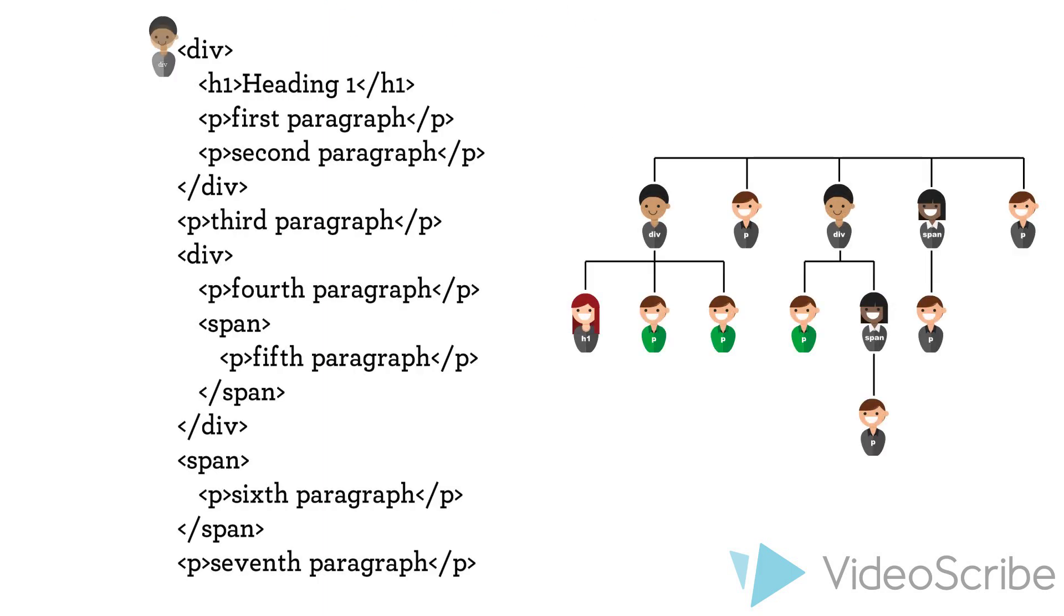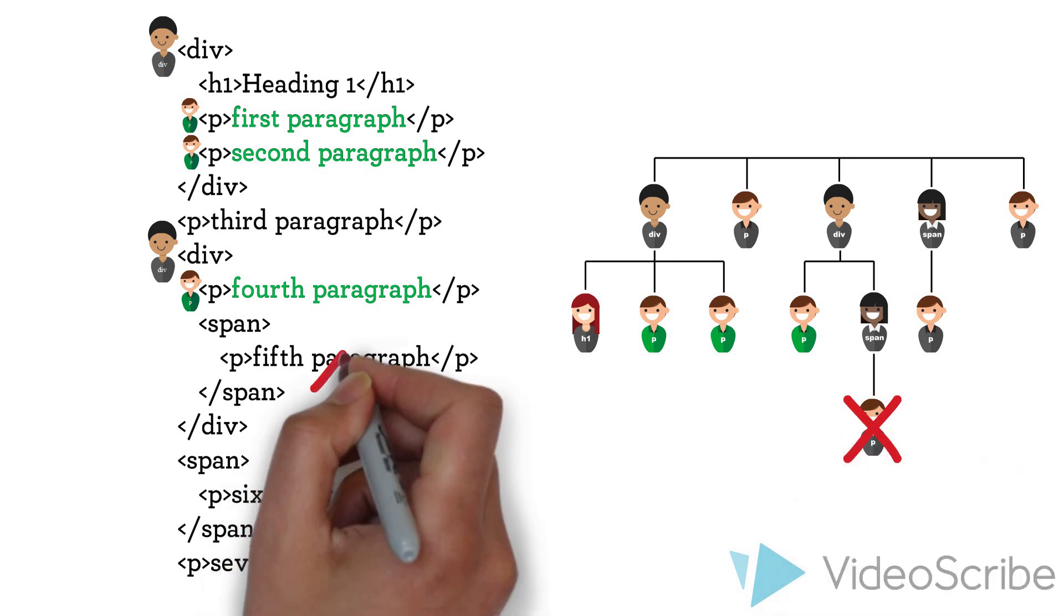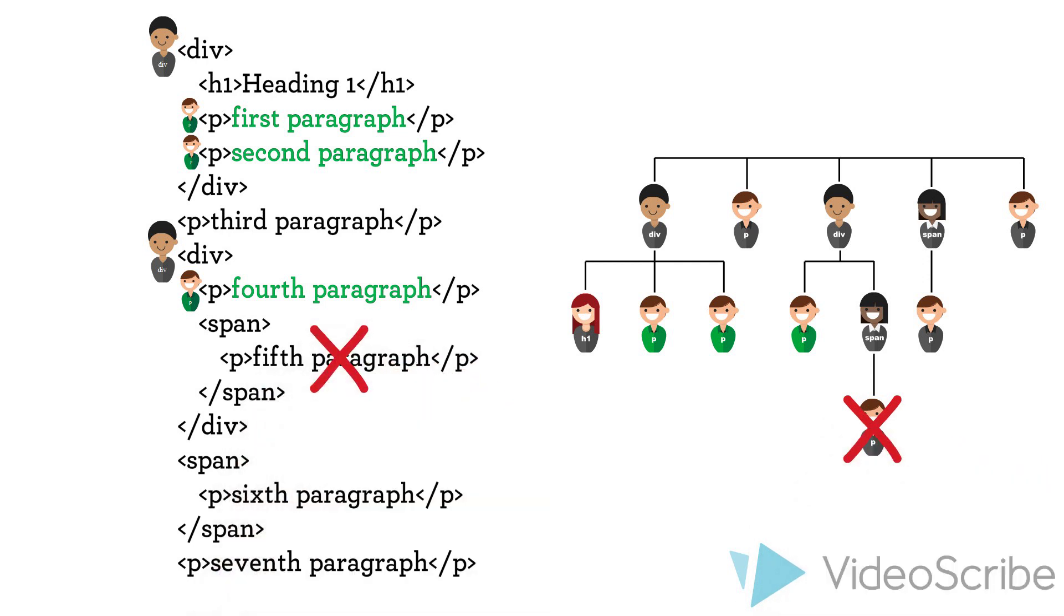The same thing happens with the CSS code. The text color of all paragraphs which are children of a div change to green. Paragraphs which are not children, even if they're grandchildren, will stay the same.